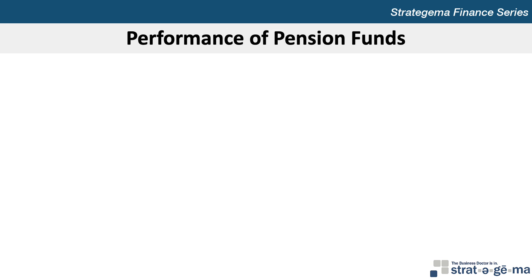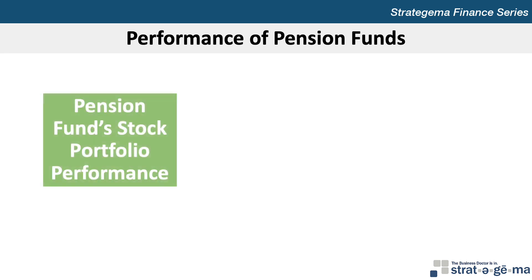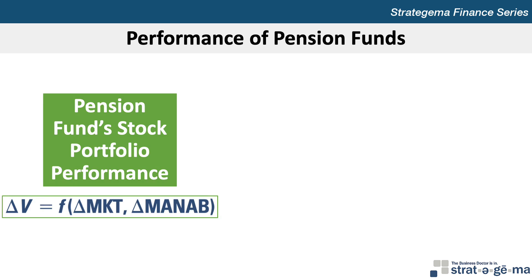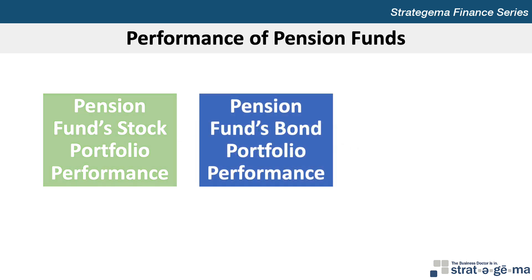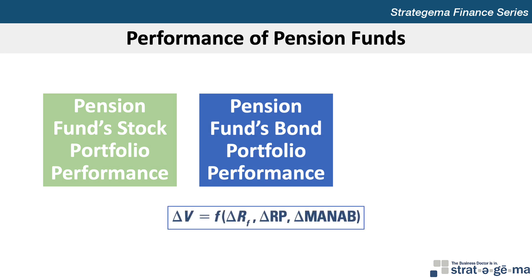The last concept in the chapter relates to the performance of pension funds. Pension funds commonly maintain a portfolio of stocks as well as a portfolio of bonds. The change in the value of a pension fund's stock portfolio can be modeled as a function of changes in general stock market conditions and the abilities of the pension fund's management. The stock portfolio's performance is usually closely related to market conditions, and can vary among pension funds due to differences in management abilities and portfolio composition. A pension fund's operating efficiency affects the expenses that the fund incurs, thereby affecting its performance. The change in the value of a pension fund's bond portfolio, including mortgage and mortgage-backed securities, can be modeled as a function of changes in the risk-free rate, the risk premium, and portfolio manager abilities.